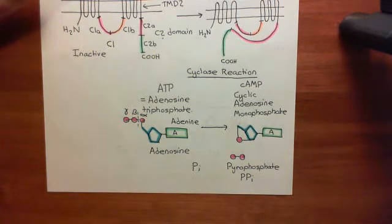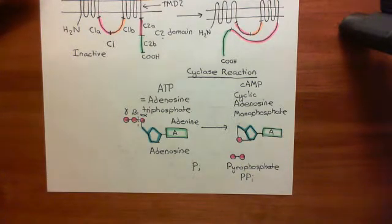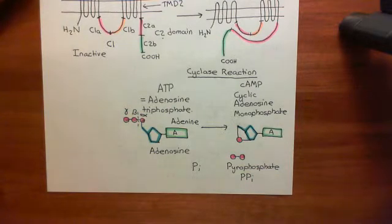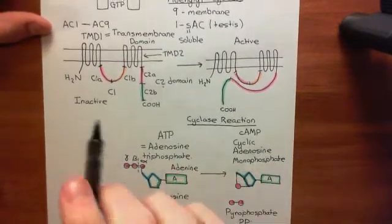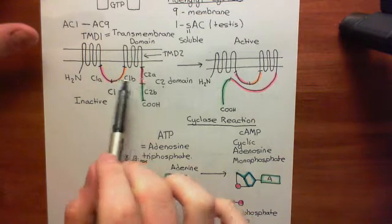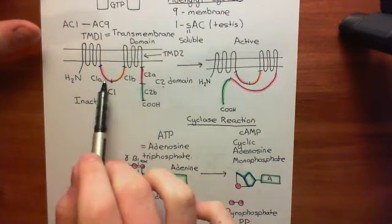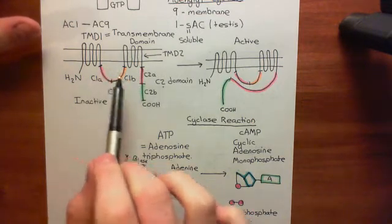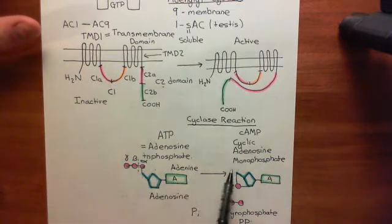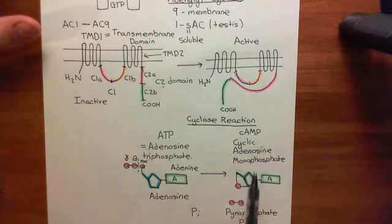Welcome back to this next video in which we are discussing the adenylyl cyclase protein kinase A pathway. We're in the process of discussing adenylyl cyclase enzymes. We've discussed the structure of adenylyl cyclase enzymes, and that to activate a membrane-bound adenylyl cyclase enzyme, you need to dimerize the C1A and C2A domains together to produce an active enzyme, which catalyzes the conversion of adenosine triphosphate into cyclic AMP and pyrophosphate.